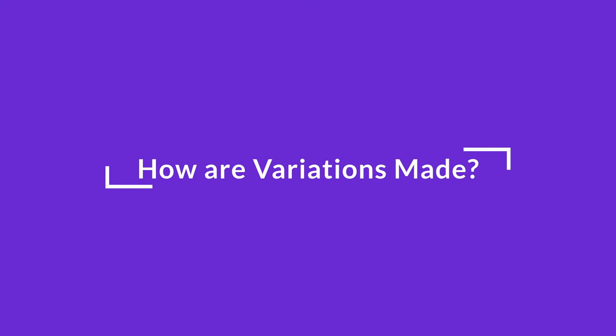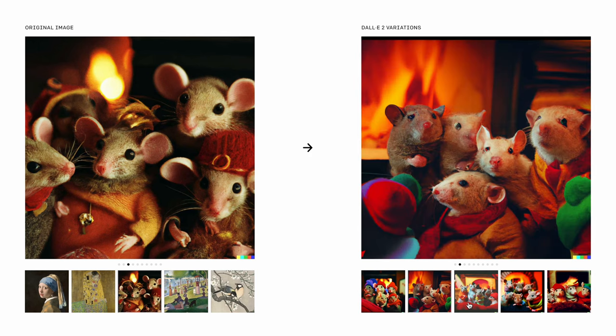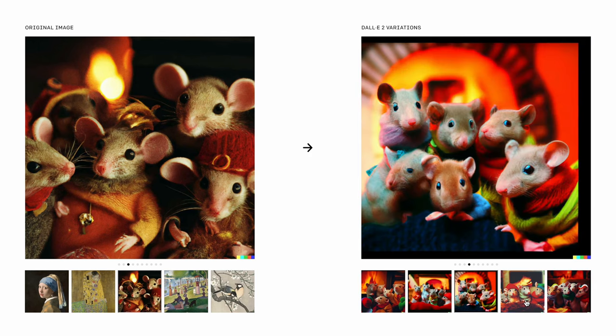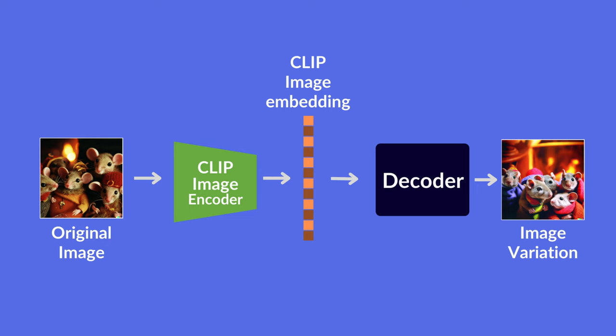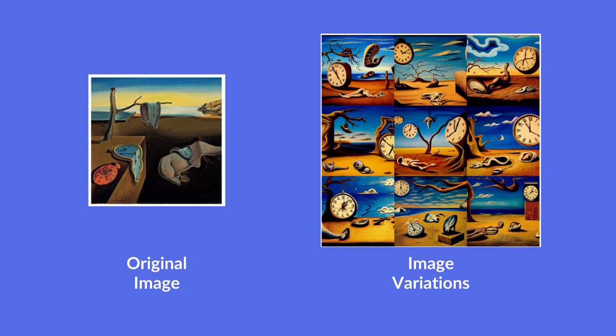Making a variation of a given image means keeping the main element and style of an image but changing the trivial details. In DALL-E 2, this is done by obtaining the image's CLIP image embedding and running it through the decoder. By encoding an image using CLIP and then decoding the image embedding using the diffusion decoder, we can also see what information was captured by CLIP and what was lost. For example, in Salvador Dalí's painting, CLIP manages to keep the existence of a clock and the stylistic details, while varying the trivial details.